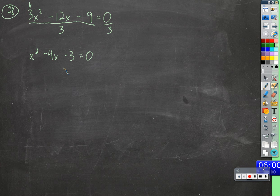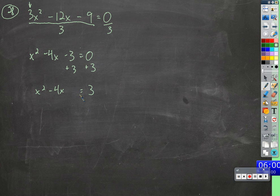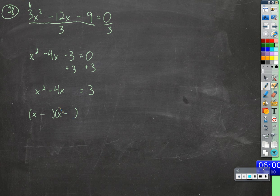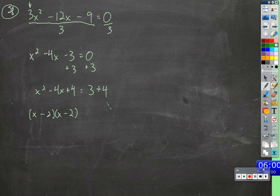We can't factor this, so we're just going to add three to both sides. Now we have x squared minus 4x equals 3. What would go right here to make it a perfect square trinomial? The two identical factors we need are going to have to be half of 4, so that would be 2 and 2. When we multiply negative 2 times negative 2, we get 4. We just added 4 to the left side, so we need to add 4 to the right side as well. Now we can write it as x minus 2 squared equals 7.